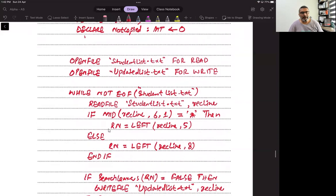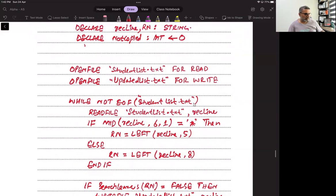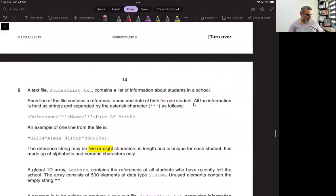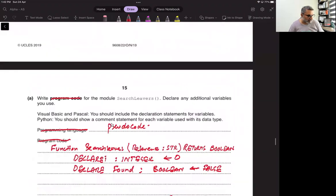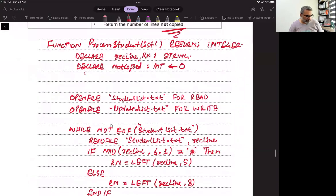While not end of file, student list dot txt. So we will read this file as a whole, then we will read one record line at a time. It was said there at the start that either the reference number is of five characters or eight characters. But whatever, if it is five characters, then the sixth one will be status. Or if it is eight characters, then the ninth one will be status. So that we have to keep in mind.